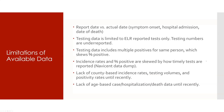Data limitations became a growing issue. There's a significant difference between report date and the actual date of symptom onset, hospital admission, or death. Testing data is limited to electronically reported tests, so many tests don't get reported. Testing data also includes multiple positives for the same person, skewing positivity rates — there was even an issue the previous day with this. Incidence rates are also skewed by reporting timeliness: a few weeks prior, a large batch of tests more than a month old was reported all at once.